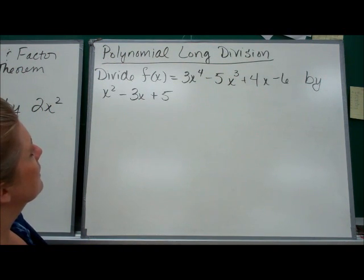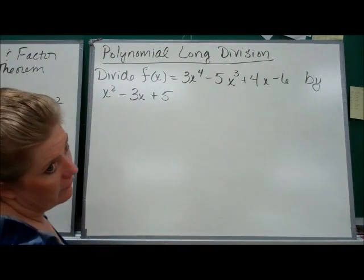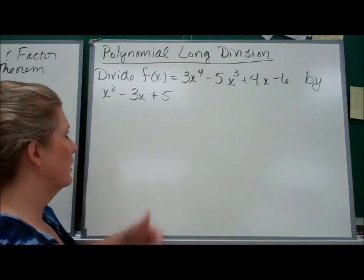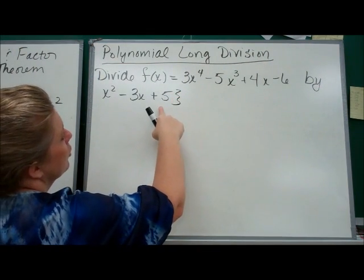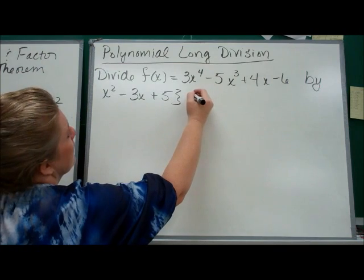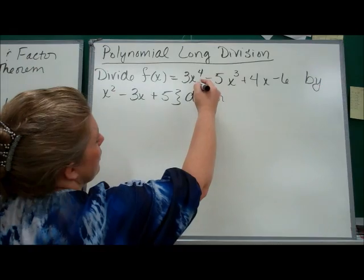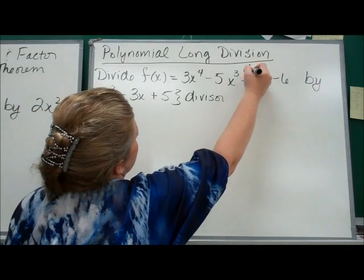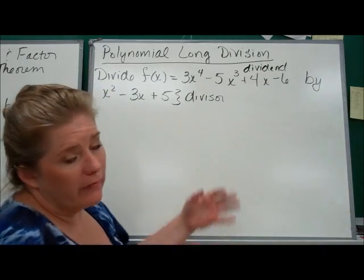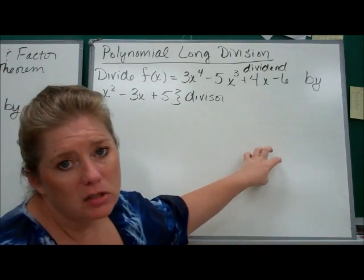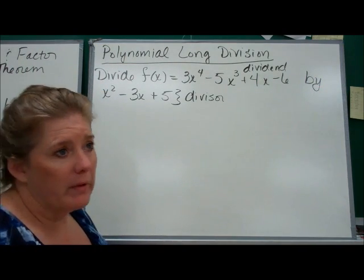So let's start with some vocabulary. This number — the number you're dividing by — is called the divisor. This number that we are dividing is called the dividend. That's the number you're dividing. And then, of course, your answer you get is the quotient. And sometimes we have a remainder.